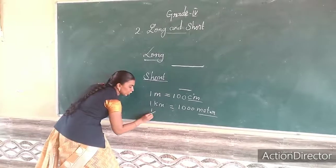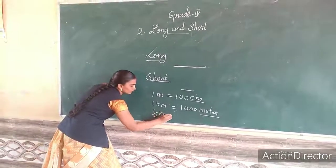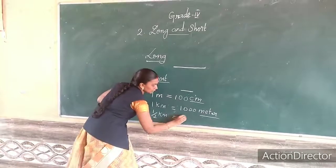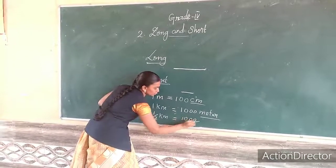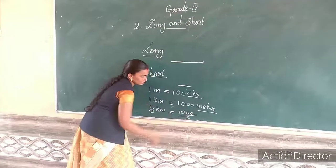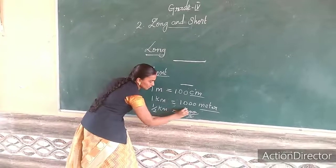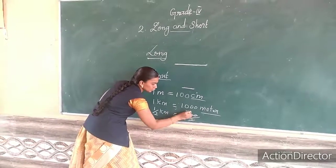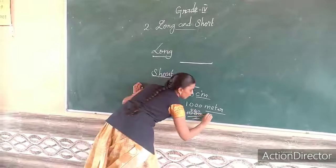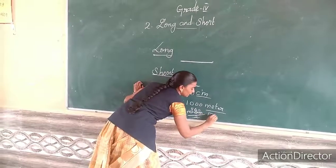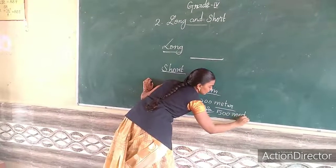Half kilometer — that is nothing but thousand divided by two. You don't consider the zero; two fives are ten, so remaining two zeros. Half kilometer means five hundred meters.